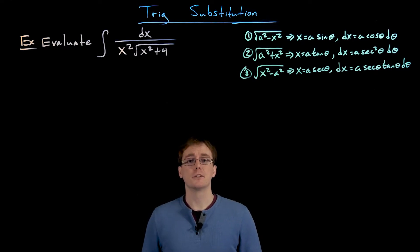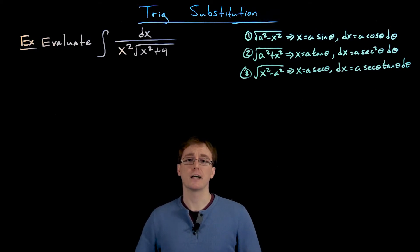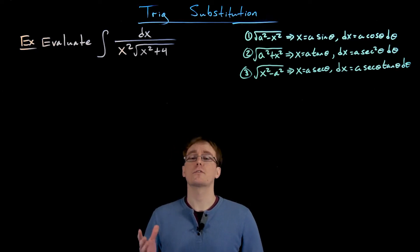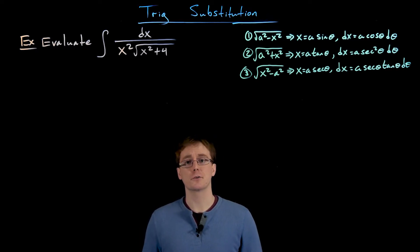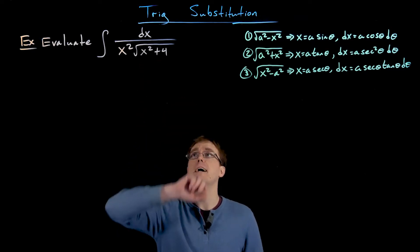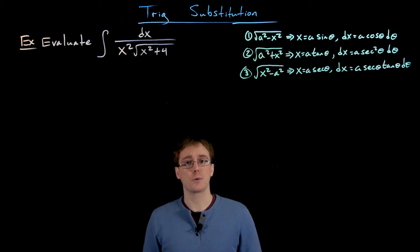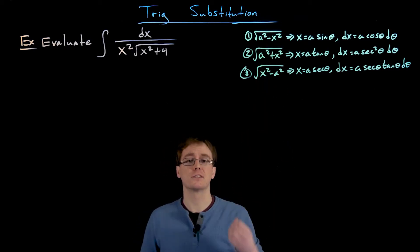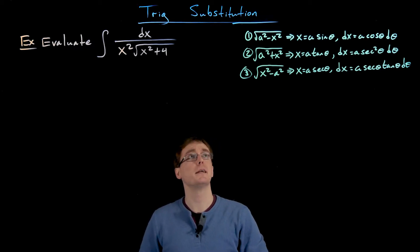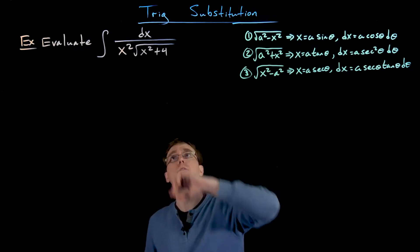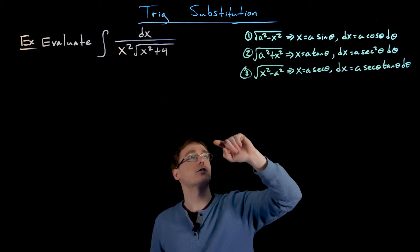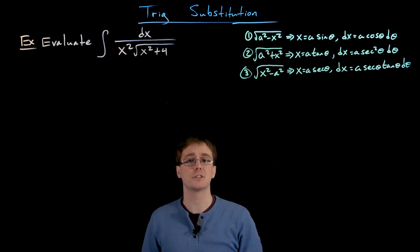After we've decided to use a trigonometric substitution, the next step is deciding which type of trig sub to use. It all comes down to what quantities are showing up in our integrand. We can observe that we have the square root of x squared plus some constant — in this case 4. Looking at the general forms, our second one, the square root of a squared plus x squared, most closely resembles what we have, which tells us we want to make a tangent substitution.